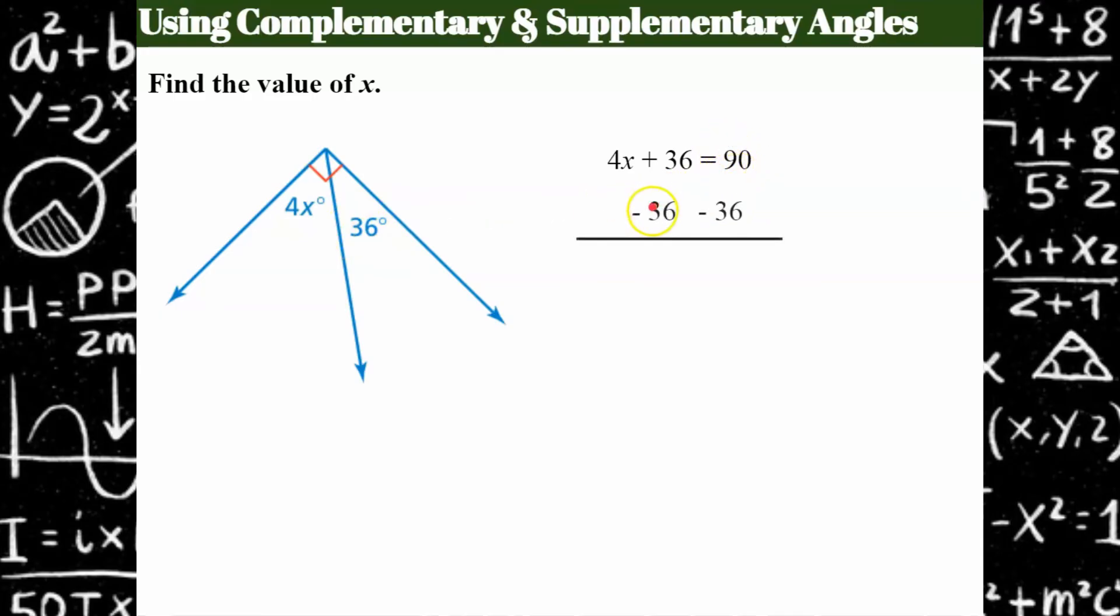So we solve our equation by subtracting 36 from both sides, resulting 4x equals 54. Divide both sides by 4, and x is equal to 13.5. And they just asked us to find x. So x here would be 13.5. This angle would be 4 times 13.5. But they only asked us for x.